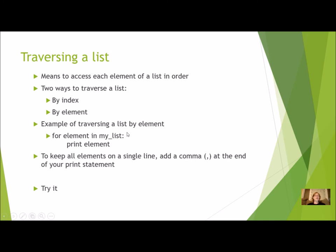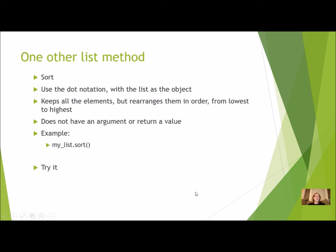Here's an example of traversing a list by element. I'm going to use a for loop, but instead of trying to use a count or a range, I can simply say for element, and this can be anything. You don't have to use the word element. This is a variable that represents each element. In my_list, and this is the name of your list, I want to print element. It will simply go in order. To keep all the elements on a single line, you're going to add a comma, and that's going to be up to you.